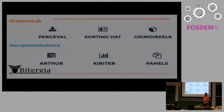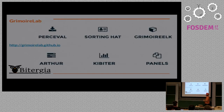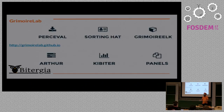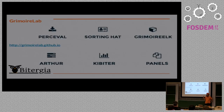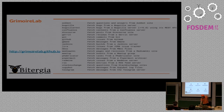People even use different identities within the same data source — for instance, people change email addresses. Sortinghat tries to keep track of that using heuristics and can also be fed with manual information such as GDIM files about affiliation. GrimoireElk is the one enriching information and producing the Kibana indexes. Arthur is currently in beta and is designed to orchestrate everything — it deals with thousands of repositories at a time, though for tens of repositories you probably don't need it. Kibitor is the fork of Kibana, and Panels is the configuration of Kibana visualizations for the dashboard.